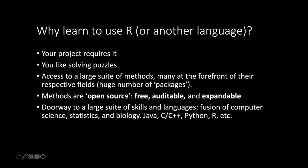I'm a big proponent of open source software because these things are really important for science, whereas other stats programs you might buy can be much harder to get under the hood. Learning to code also opens a doorway to a large suite of skills and languages — it's really a fusion of computer science, stats, and biology. A lot of people go from R into Python or Java, making it a gateway language for those coming from the biology side.